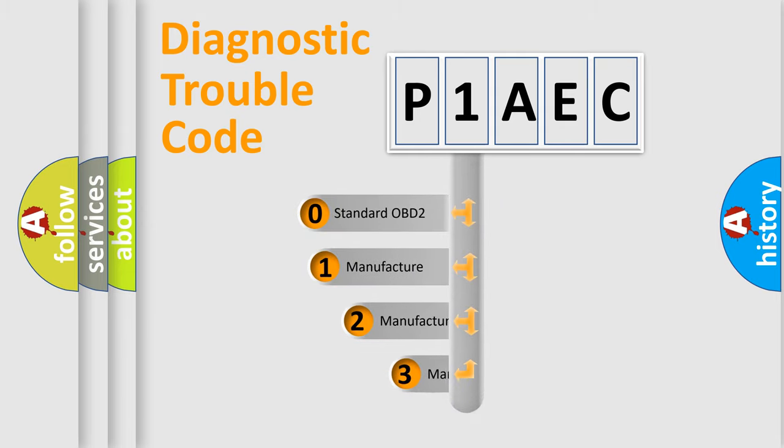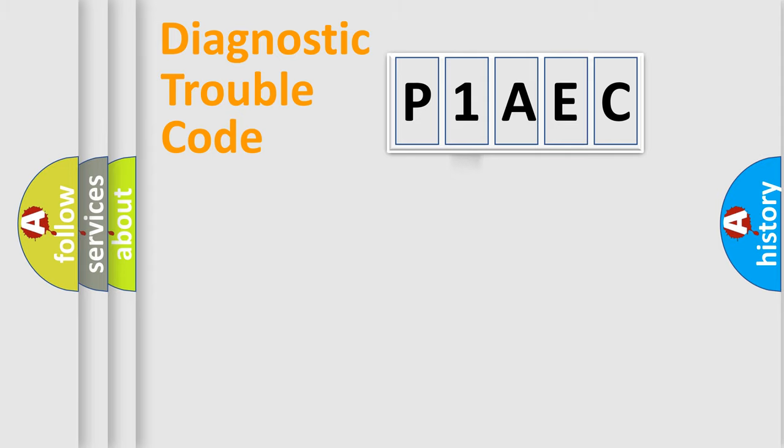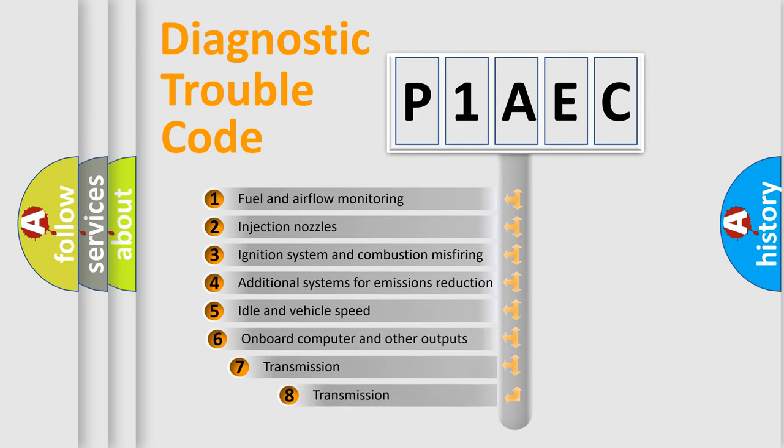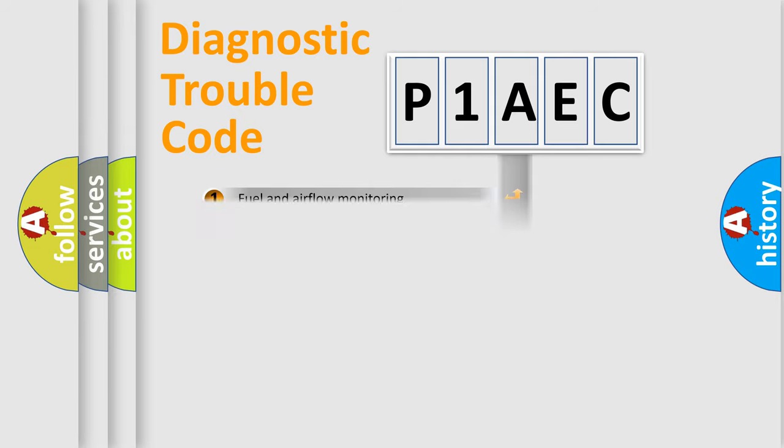If the second character is expressed as zero, it is a standardized error. In the case of numbers 1, 2, or 3, it is a more precise expression of the car-specific error. The third character specifies a subset of errors. The distribution shown is valid only for the standardized DTC code.